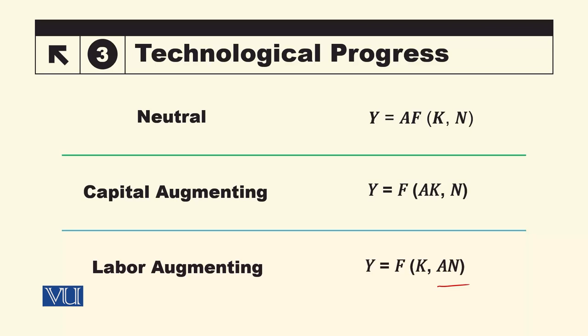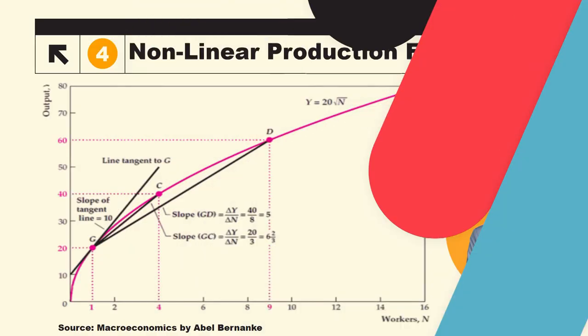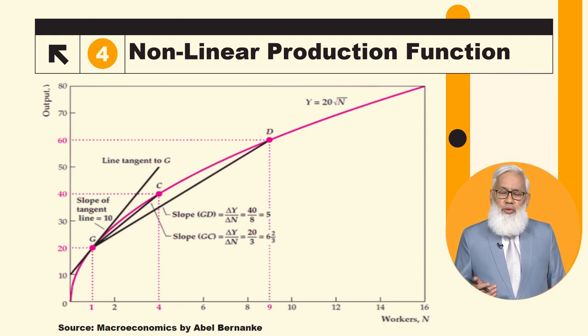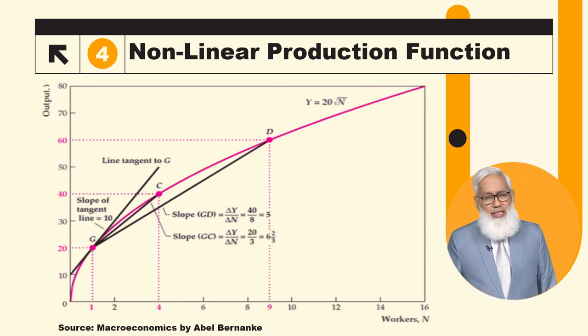I have explained that neutral will affect both. Capital augmenting will only affect capital, and labor augmenting will only affect labor's marginal product.